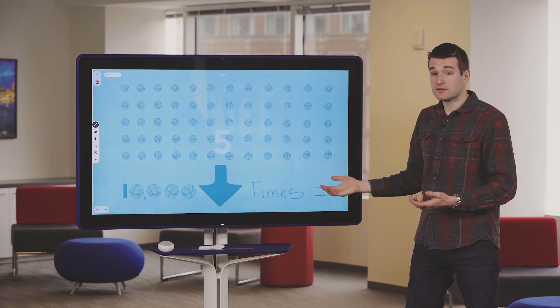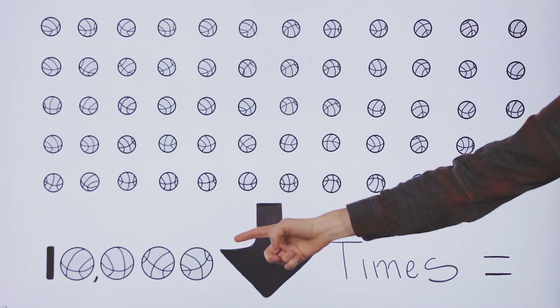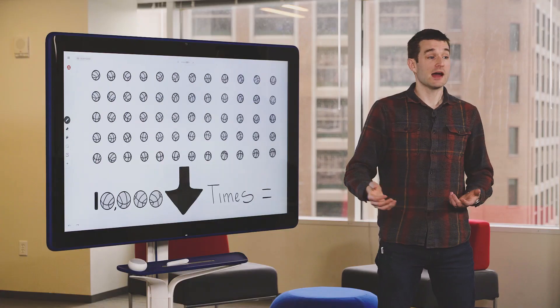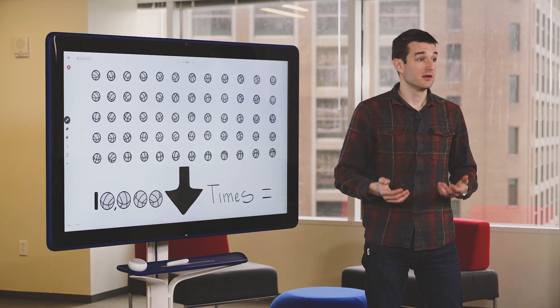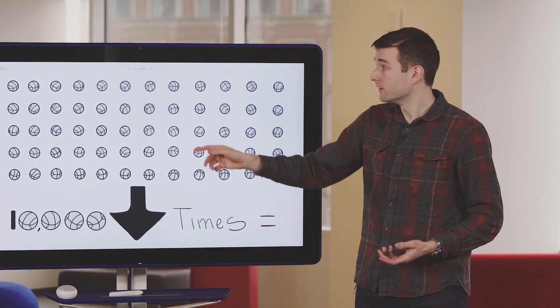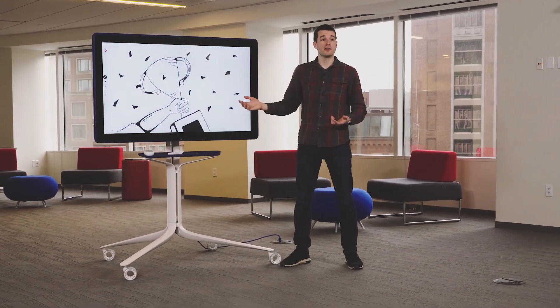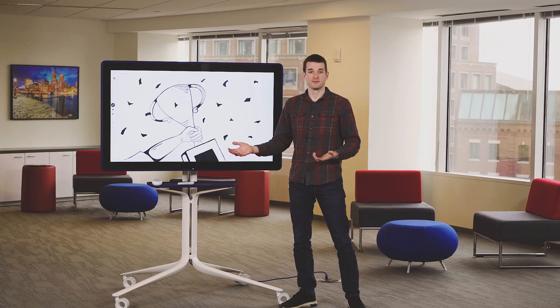You repeat this process 10,000 times, and then count up the number of times your favorite team won, divide by 10,000, and those are the odds that your favorite team will win the entire tournament. And that's sports analytics.